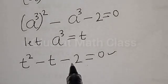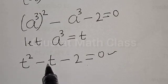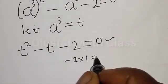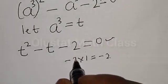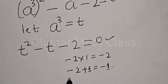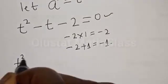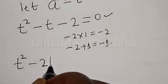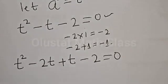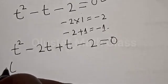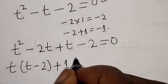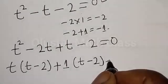We look for two numbers such that their product gives minus 2 and their sum gives minus 1. We have minus 2 multiplied by 1 equals minus 2, and minus 2 plus 1 equals minus 1. Therefore, we have T squared minus 2T plus T minus 2 is equal to 0.